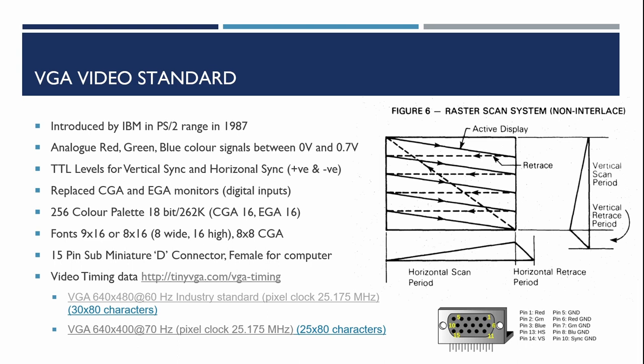VGA replaced the CGA and EGA monitors, which had digital inputs. The ability to use analog signals meant much greater color capability — VGA included a 256-color palette out of an 18-bit range, giving some 262,000 possible colors, compared to CGA and EGA which both had 16. Character fonts were generally nine dots by 16 dots or eight dots by 16, and in this design we're simplifying by using the 8x16 format.